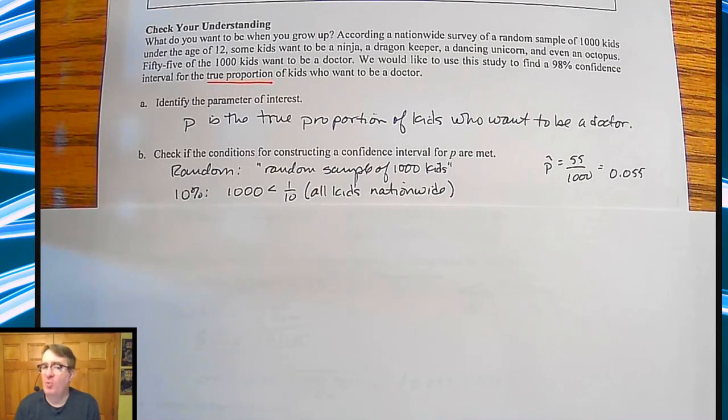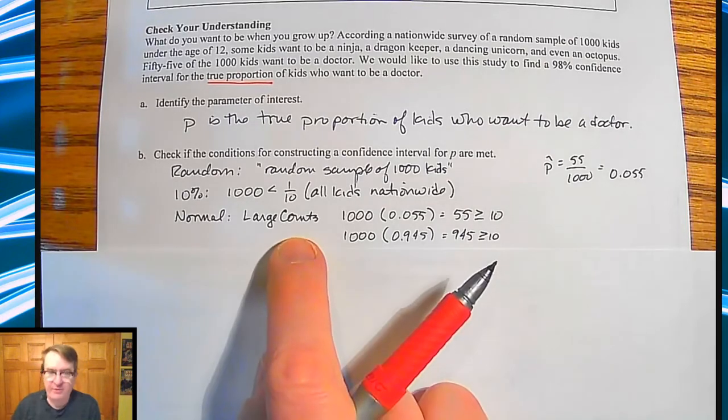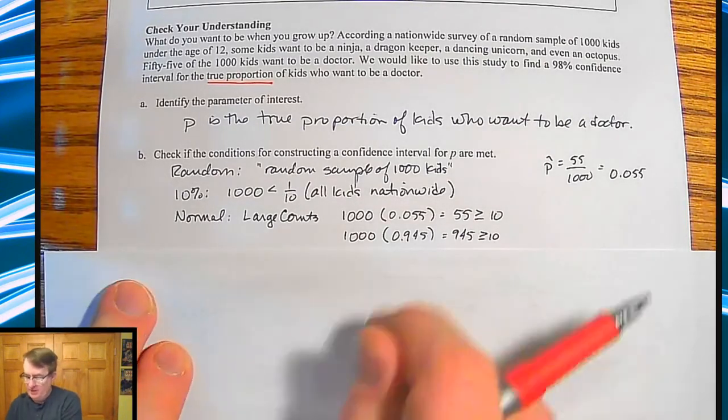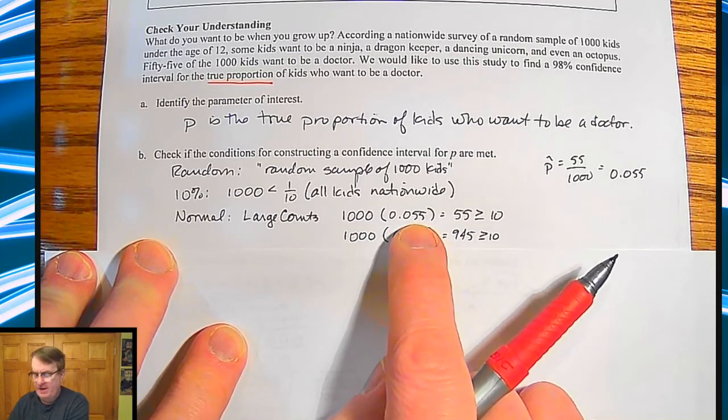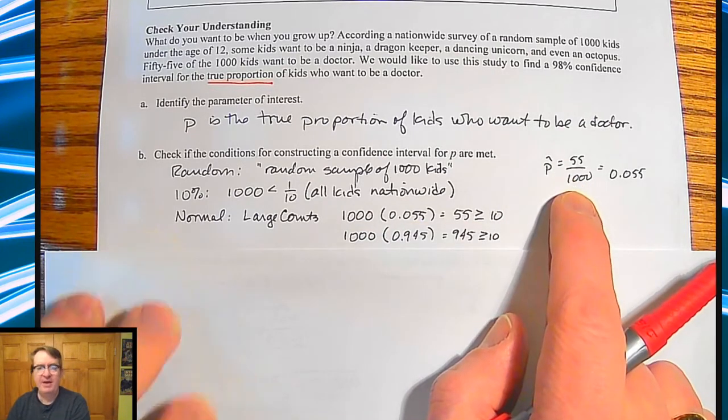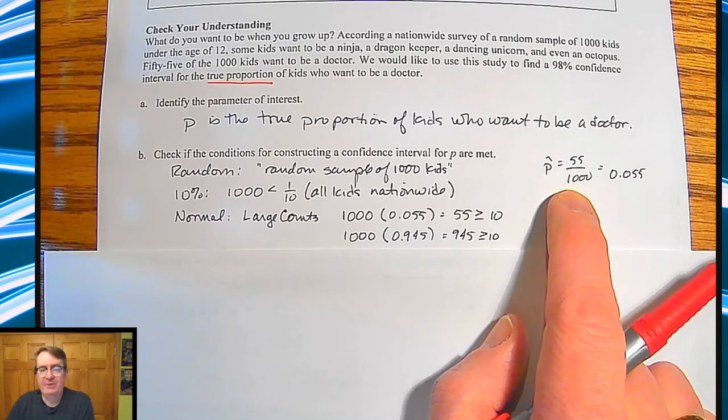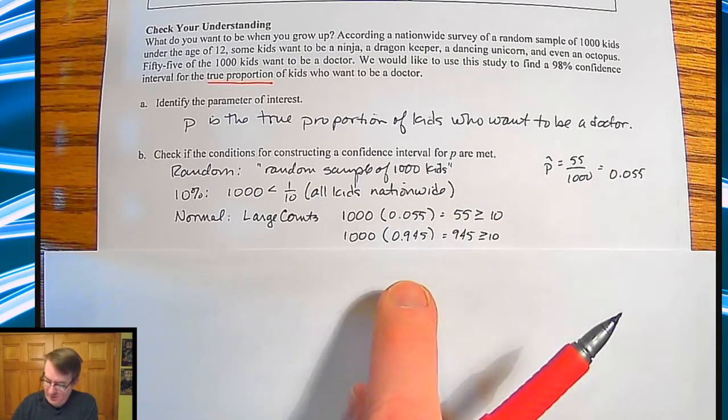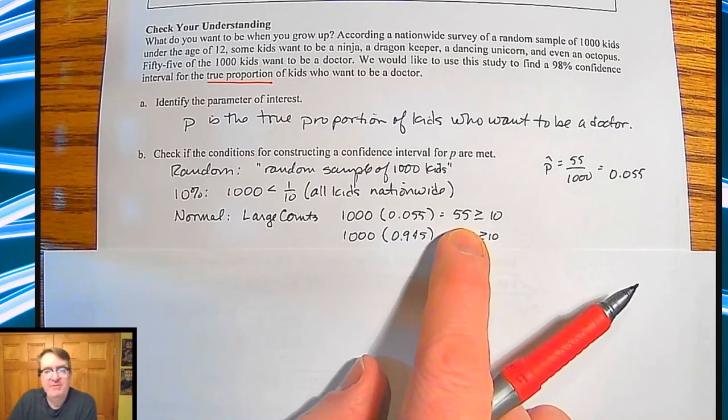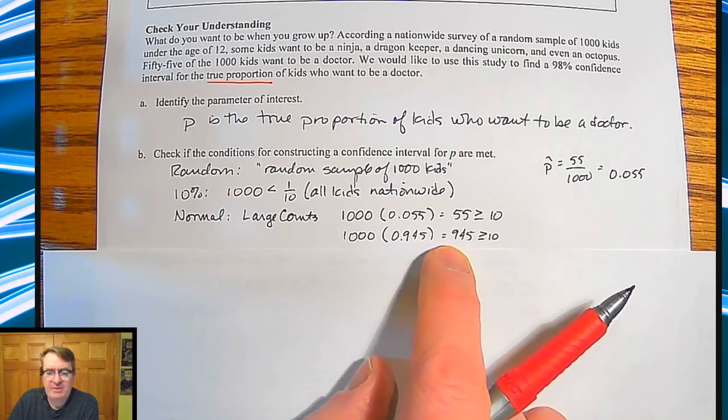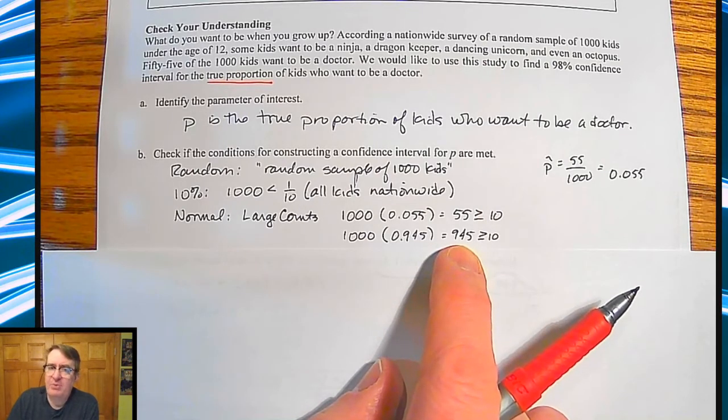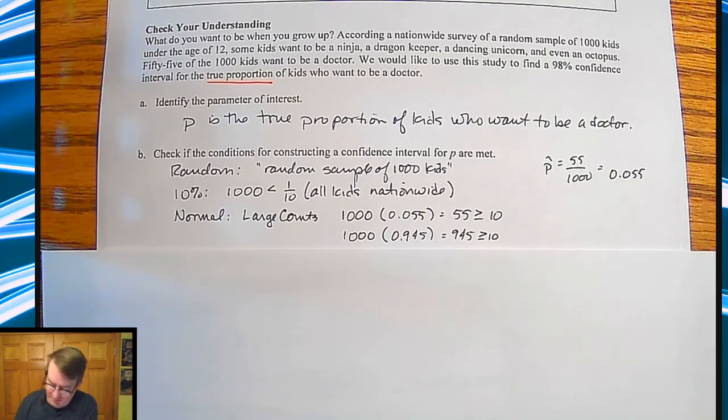Our 10% rule, 1000 is definitely less than one tenth of all kids in the nation. And normal, we're going to look for large counts since it was not set up here. And so 1000 times 0.055, where did I get the 0.055? Well, I took 55 divided by a thousand to get my p hat value. 1000 times 0.055 is 55. That's definitely bigger than 10. And then obviously the rest of it's going to be much bigger than 10 because you're going to have 945 people who don't want to be doctors and that's going to be bigger than 10 there.